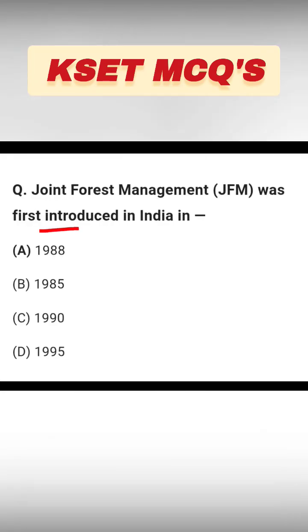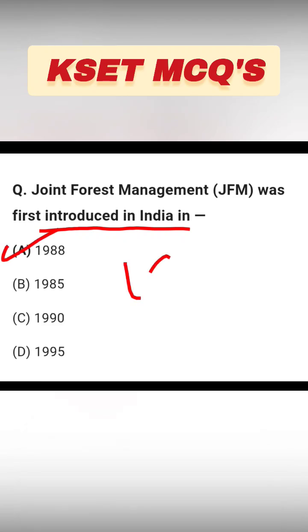Joint Forest Management was first introduced in: options are 1988, 1985, 1990, and 1985. The right answer is option 1988.